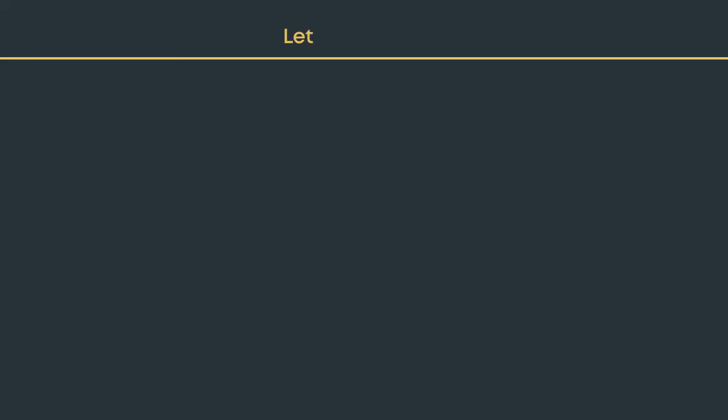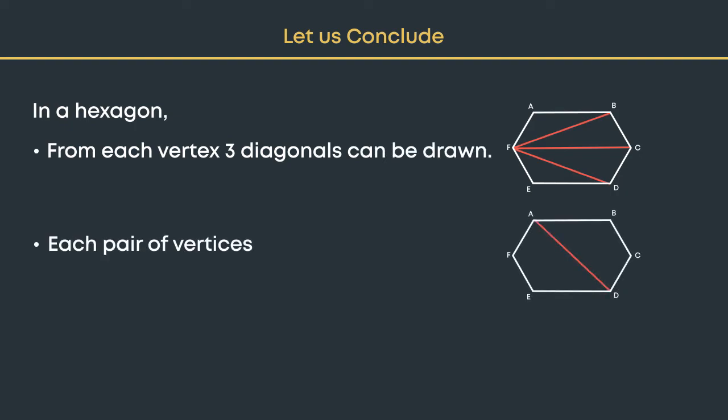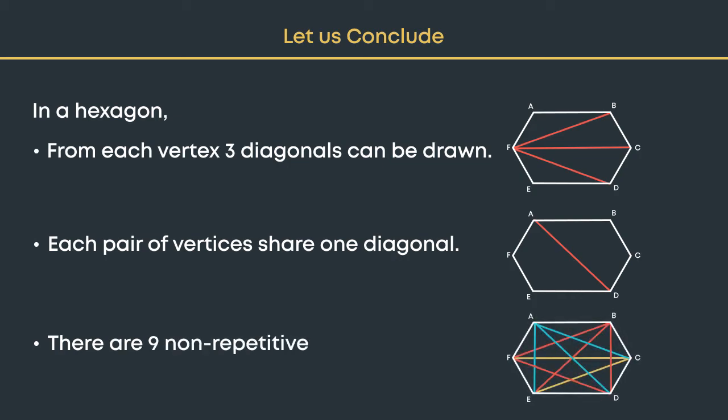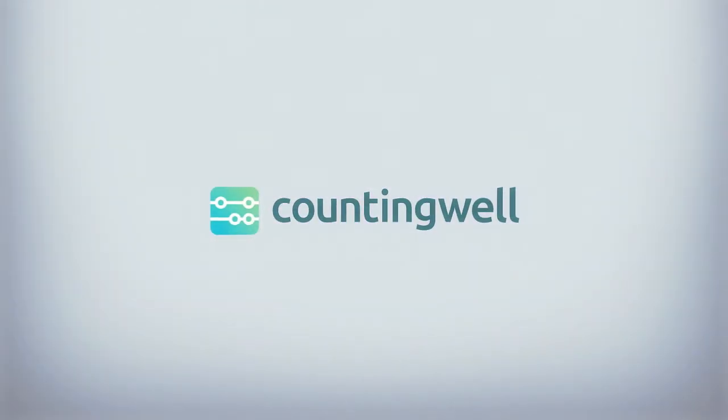Let us conclude. In a hexagon, from each vertex three diagonals can be drawn. Each pair of vertices share one diagonal. There are nine non-repetitive diagonals.